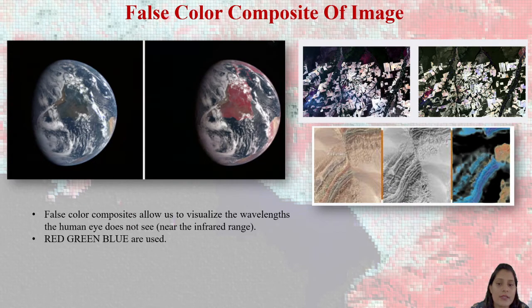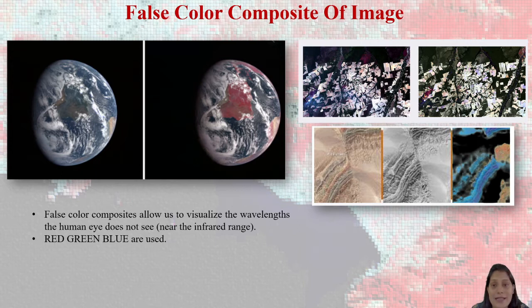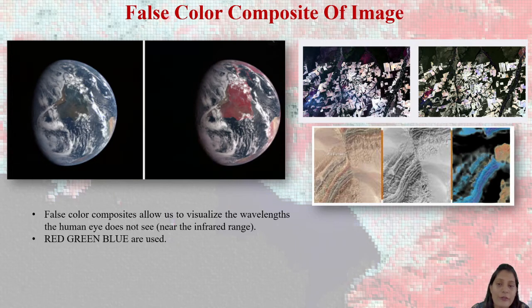False color composite allows us to visualize the wavelengths the human eye does not see, near infrared range. Red, green, and blue are used. When you download the image from the sensor, you can see the earth image in blue color, but you cannot identify what features it represents. Look at the image on the right-hand side with red, white, blue, and greenish colors. Your eyes can identify that. So that is the concept of false color composite.